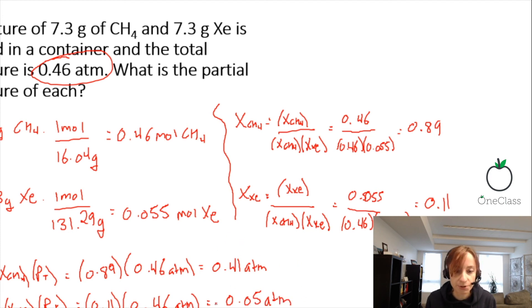So your partial pressure should add up to give you the total pressure. So that's a good way to double-check your work.